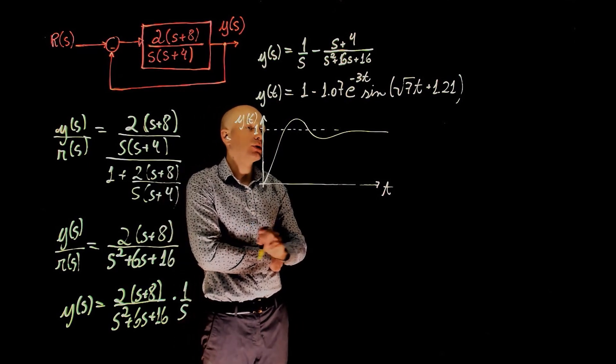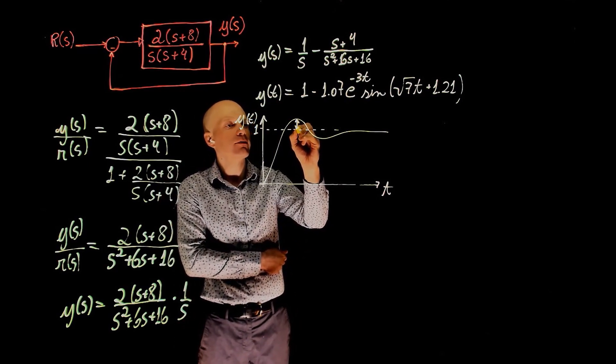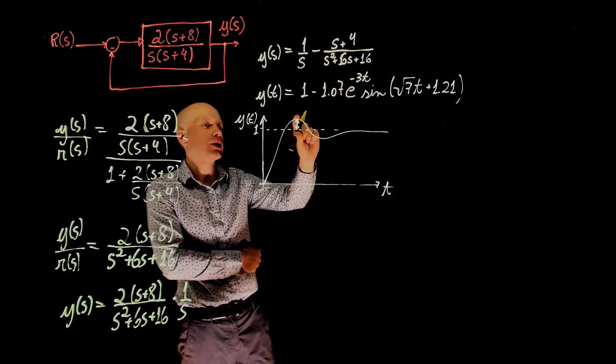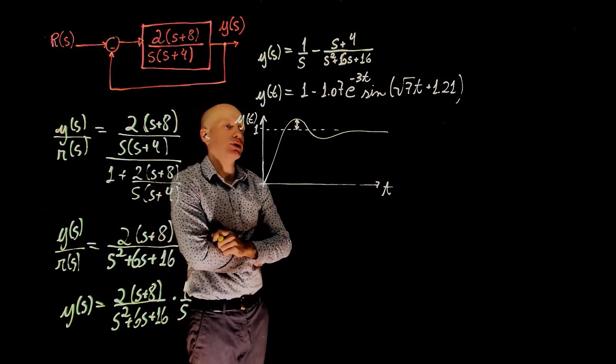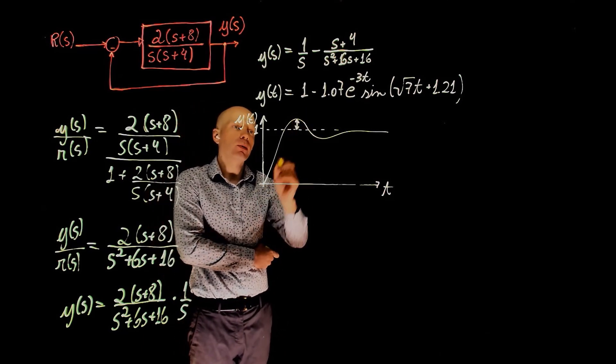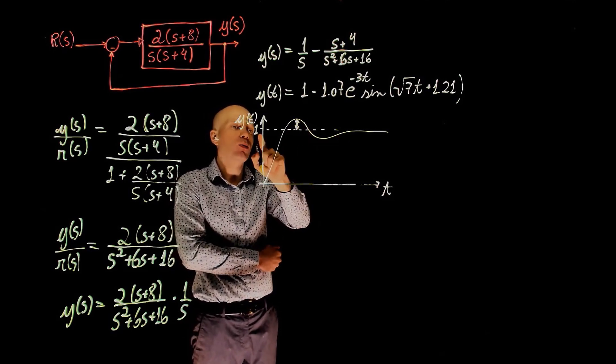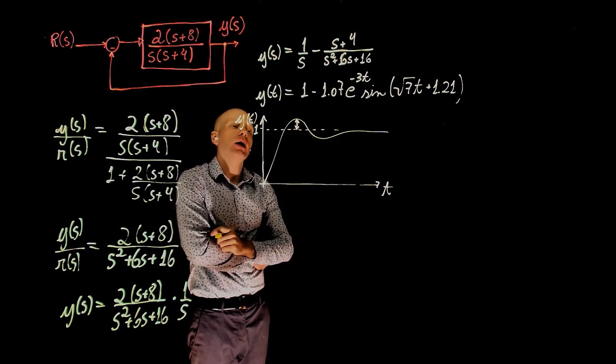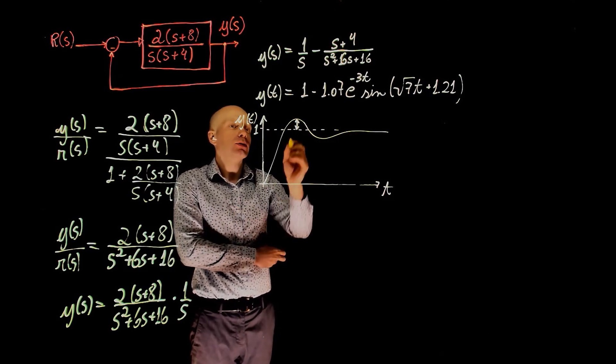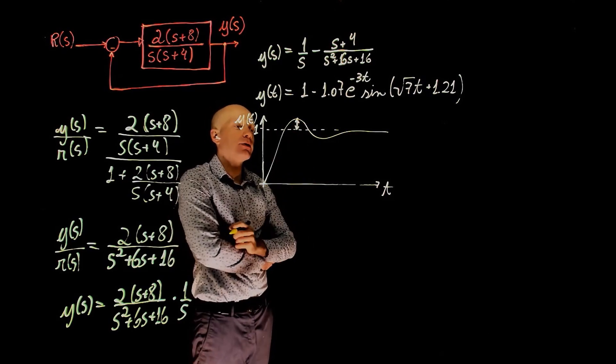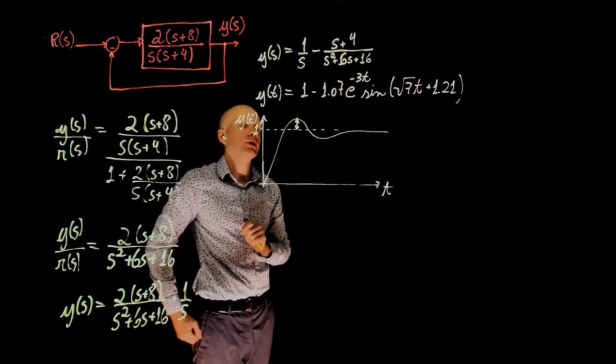We want the percent overshoot. The percent overshoot is how much it goes beyond the final value here. It's this part of the expression. We want now to know what this variation is, how far it goes from 1 before it settles at 1. So this clearly, in this specific case, represents the maximum of y of t.